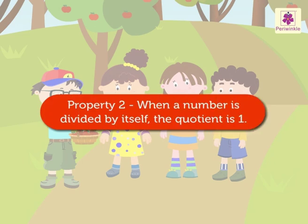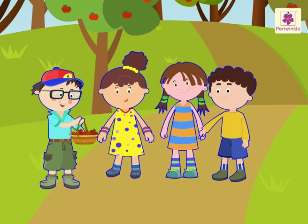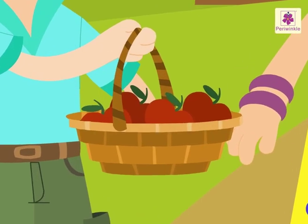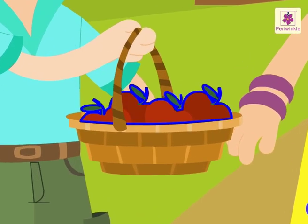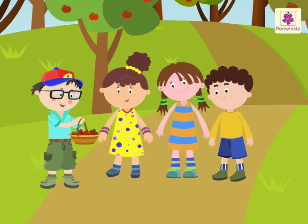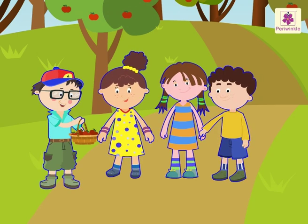Property two: when a number is divided by itself, the quotient is one. Now we can see four kids, and the number of apples in the basket is four. How many apples does each kid get?